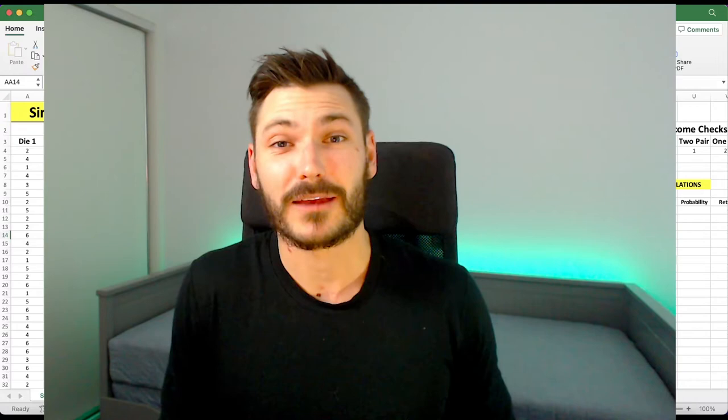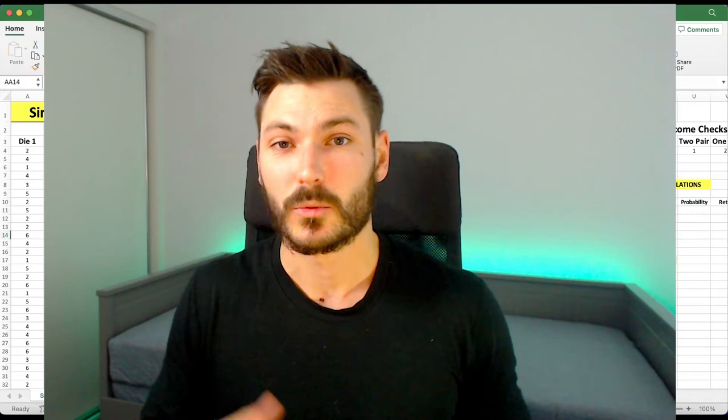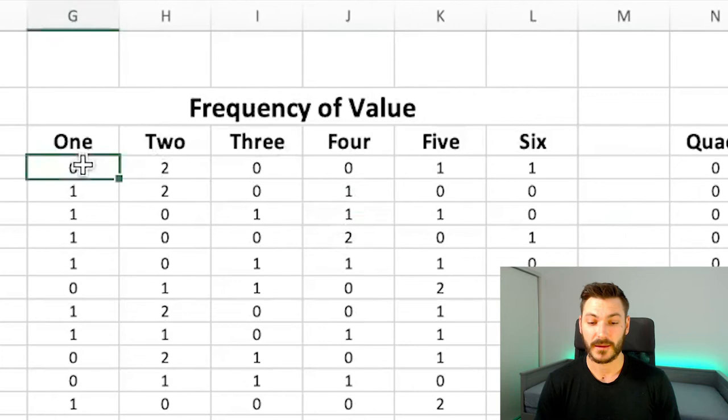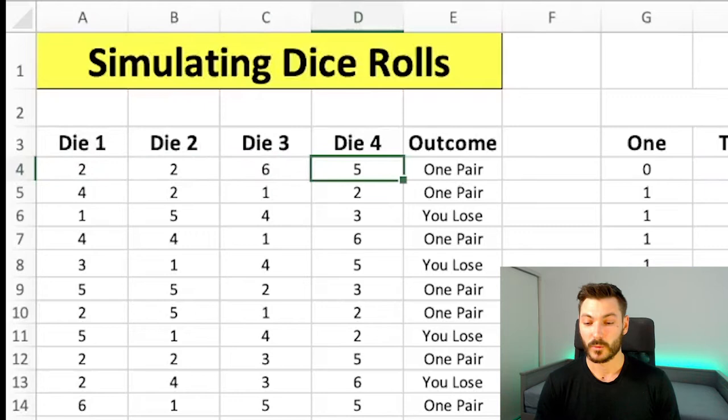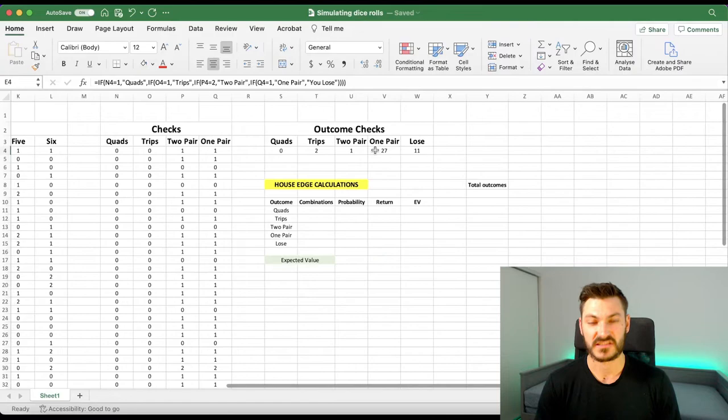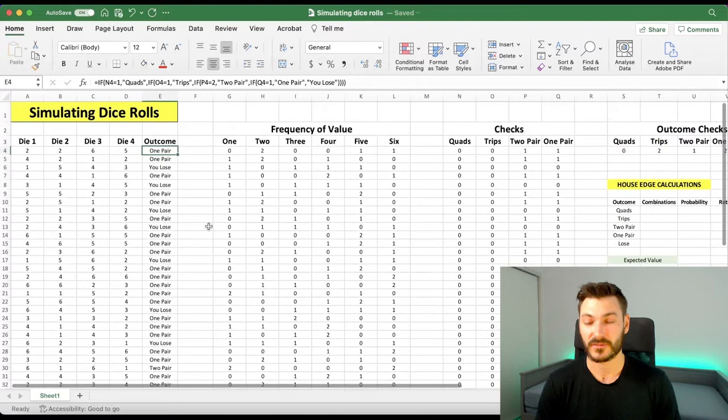Hi there, welcome back. If you watched the previous video, there is a link on the screen where we went through all the maths which generated this spreadsheet. To quickly summarize, we simulated a bunch of die, tallied up the frequency of the values in that roll of 4 die, then determined what the resulting outcome was, whether it was one pair, two pair, trips or quads. Finally we displayed that outcome and summarized the list of these outcomes.